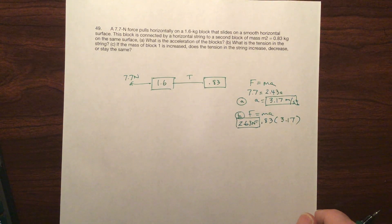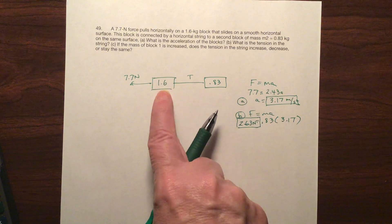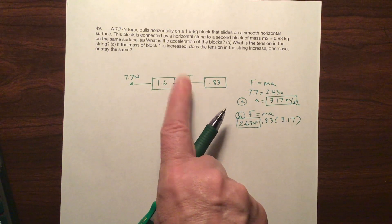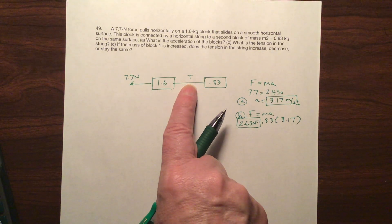All right, so what's the last question? If the mass of block one is increased, does the tension in the string increase, decrease, or stay the same? Okay, so block one is this one. So if this one gets bigger, does this tension change or not change or go down?